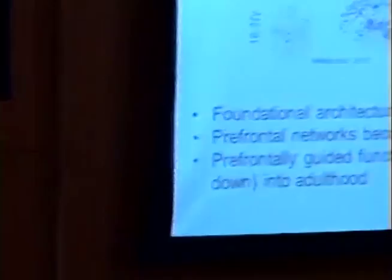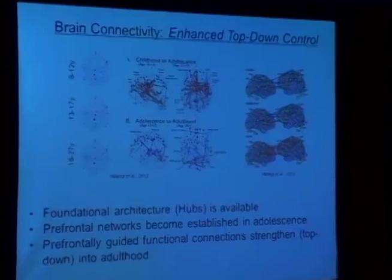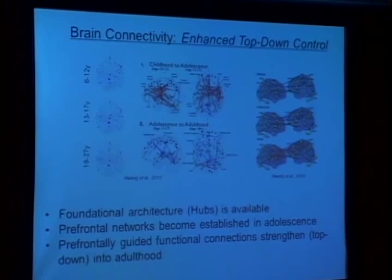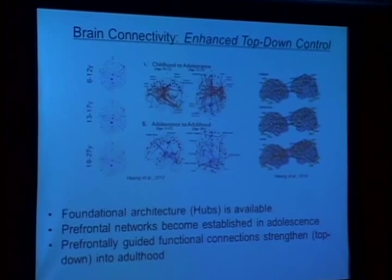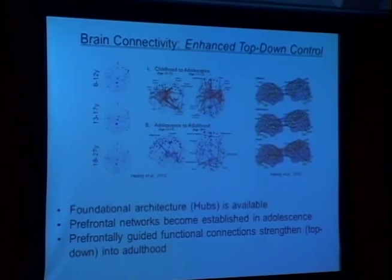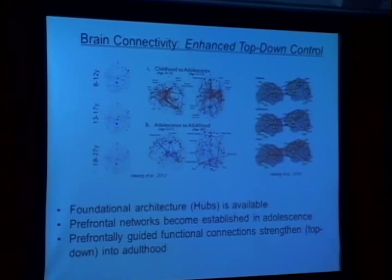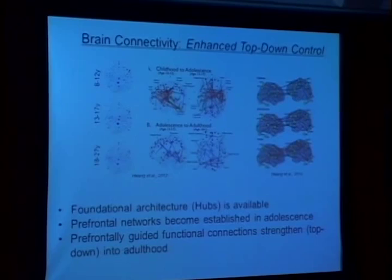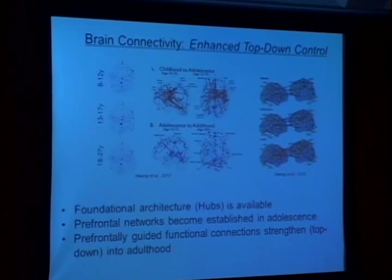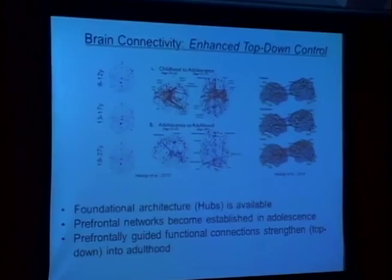It's more about networks than about individual regions. Prefrontal cortex is like an orchestrator — it knows who does everything and coordinates how everything occurs. Connectivity becomes extremely important. One incredibly recurrent theme is that the connections from prefrontal to downward regions — the ones that provide control — are already available by adolescence, with subsequent refinement occurring afterward.